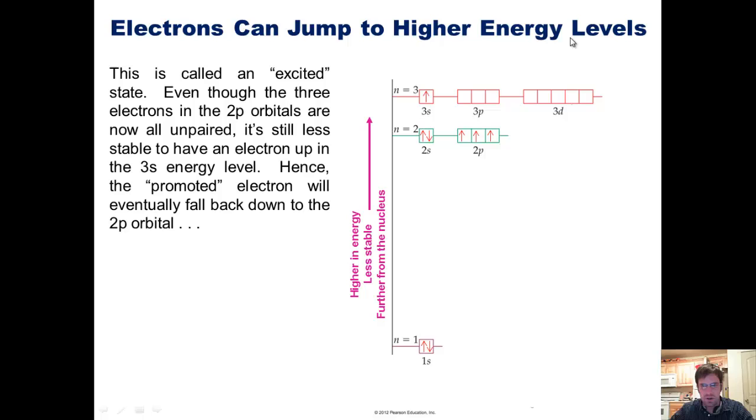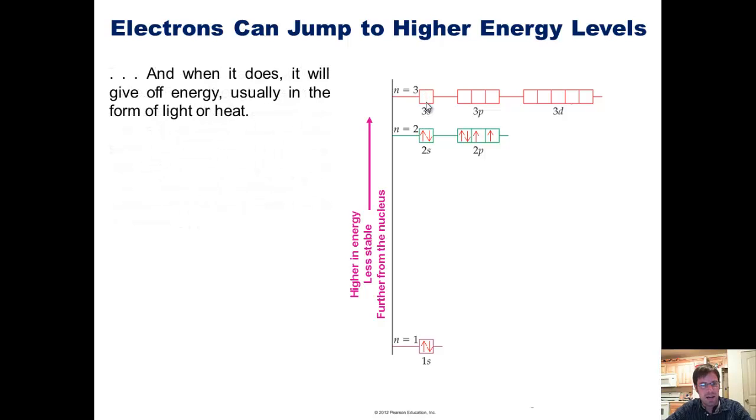Even though the three electrons in the 2p orbitals are now all unpaired, it's still less energetically favorable, less stable to have one electron up here in this higher energy 3s level. Hence, the promoted electron up here in the 3s orbital will eventually fall back down to the 2p orbital. And when it does, it will give off energy, usually in the form of heat or light.